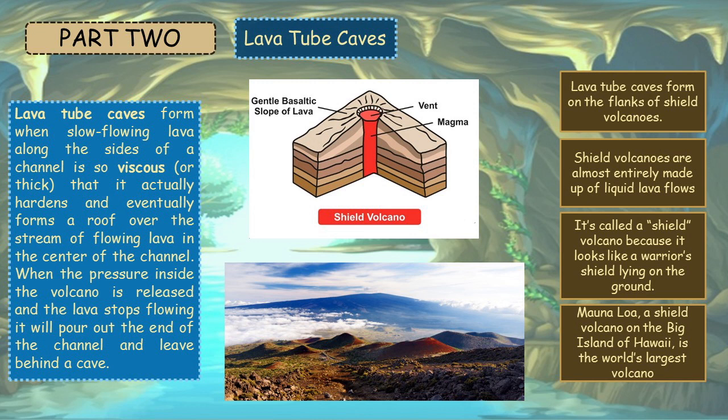Lava tube caves form on the flanks of a shield volcano. Shield volcanoes are almost entirely made up of liquid lava flows. It's called a shield volcano because it looks like a warrior's shield lying on the ground. Mauna Loa, a shield volcano on the big island of Hawaii, is the world's largest volcano.